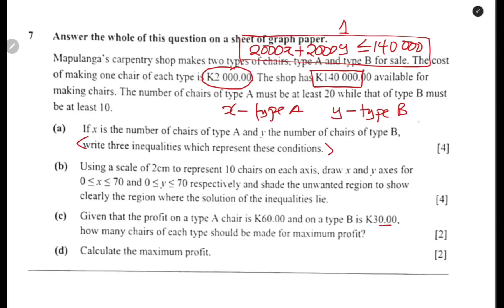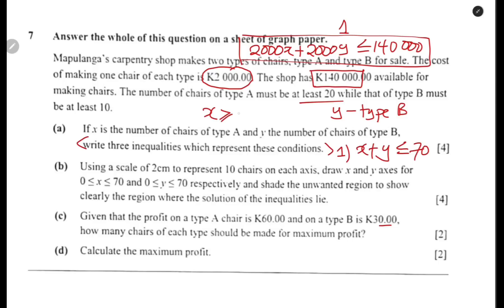The number of chairs of type A must be at least 20. Since type A is X, we have X ≥ 20. This is the second inequality. Then, type B must be at least 10. Since type B is Y, we have Y ≥ 10. This is the third inequality. So we have three inequalities: X + Y ≤ 70, X ≥ 20, and Y ≥ 10.